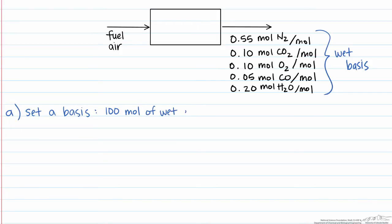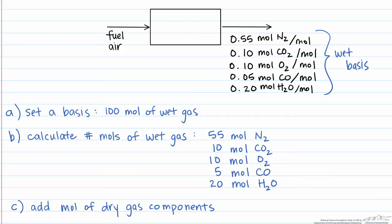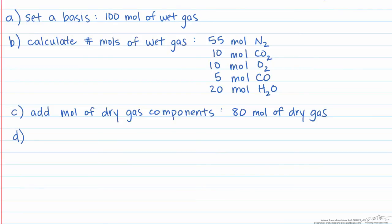Using that, we calculate the moles of everything that comes out in the product gas. Now, because we're looking for mole fractions on a dry basis, we add up all the moles of the dry gas components — that's everything except for the H2O. So we have 55 moles of N2, plus 10 moles of CO2, plus 10 of O2, plus 5 moles of carbon monoxide, which is equal to 80 moles.